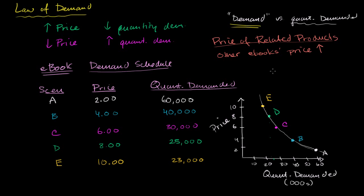If other e-books' prices go up, now all of a sudden my e-book, regardless of what price point we're at, is going to look more desirable. At $2, more people will want it because the other stuff is more expensive. At $4, more people will want it. At $6, more people will want it. At $8 and $10, more people will want it. So if this were to happen, that would actually shift the entire demand curve to the right. We'll call that scenario one.